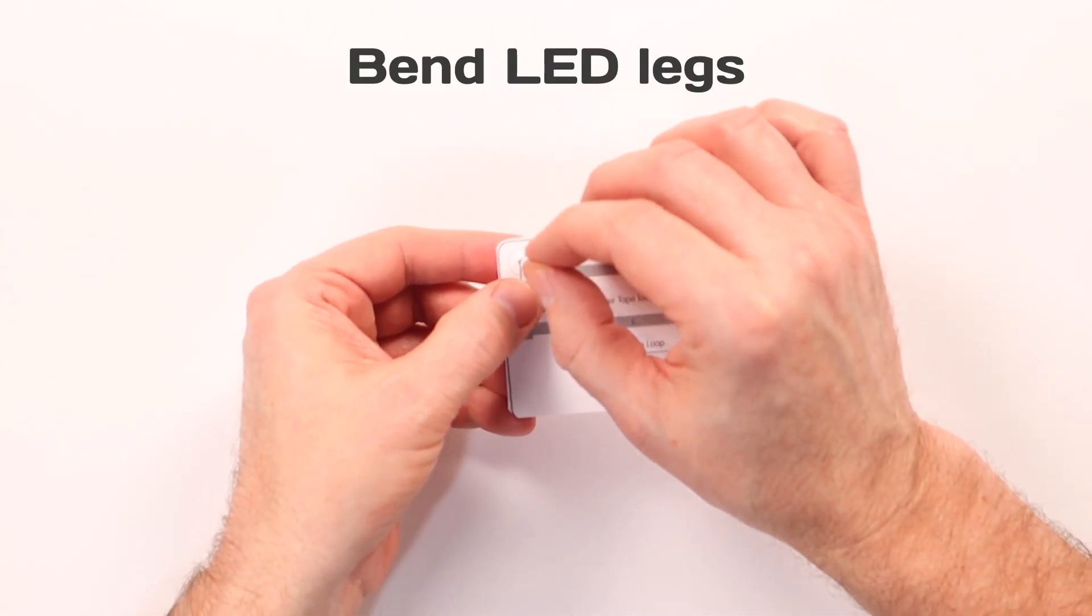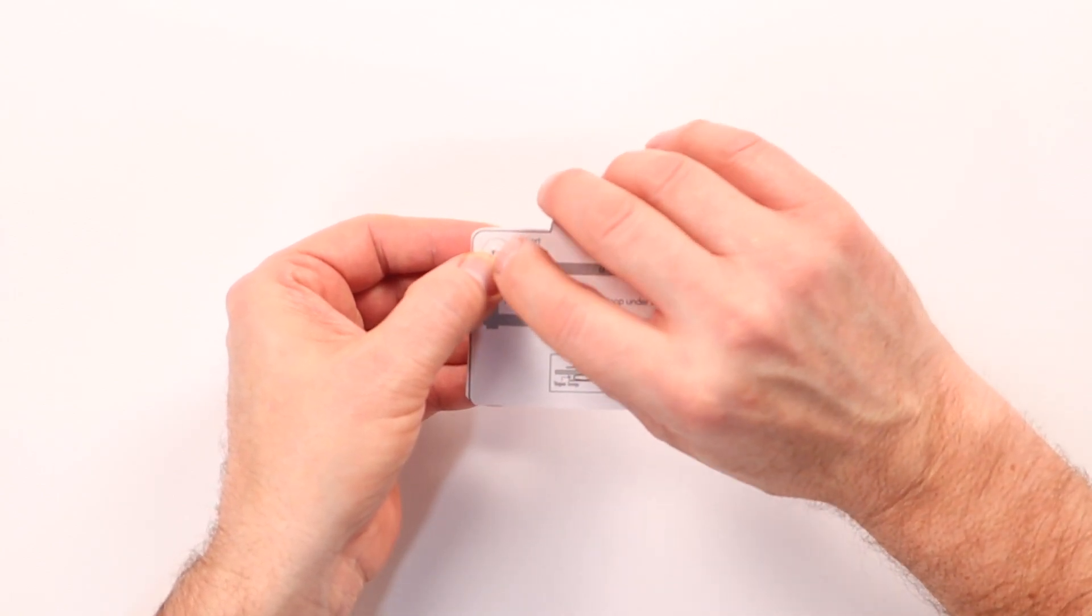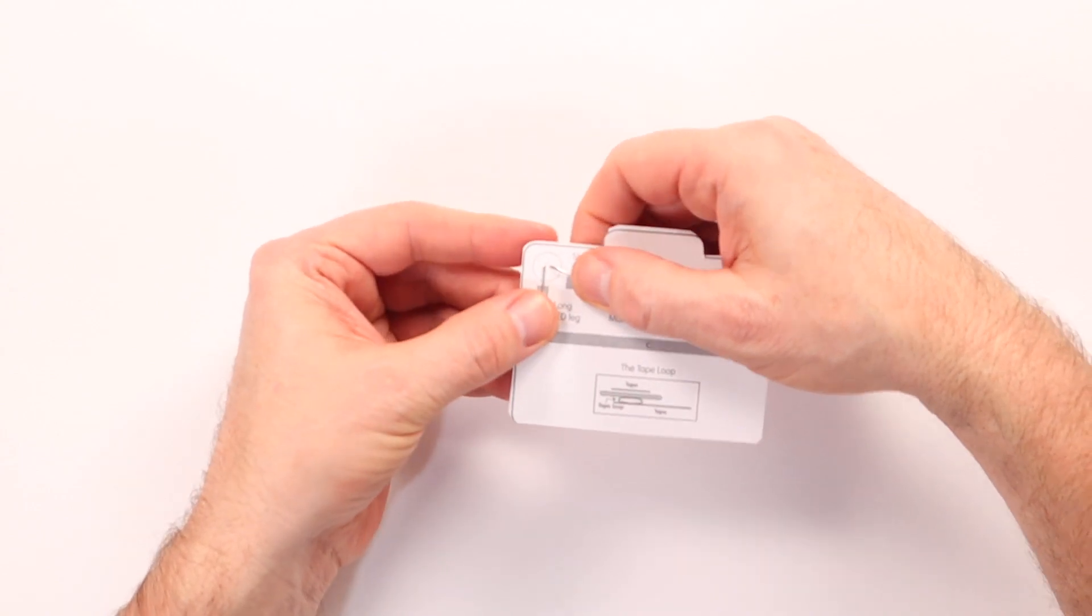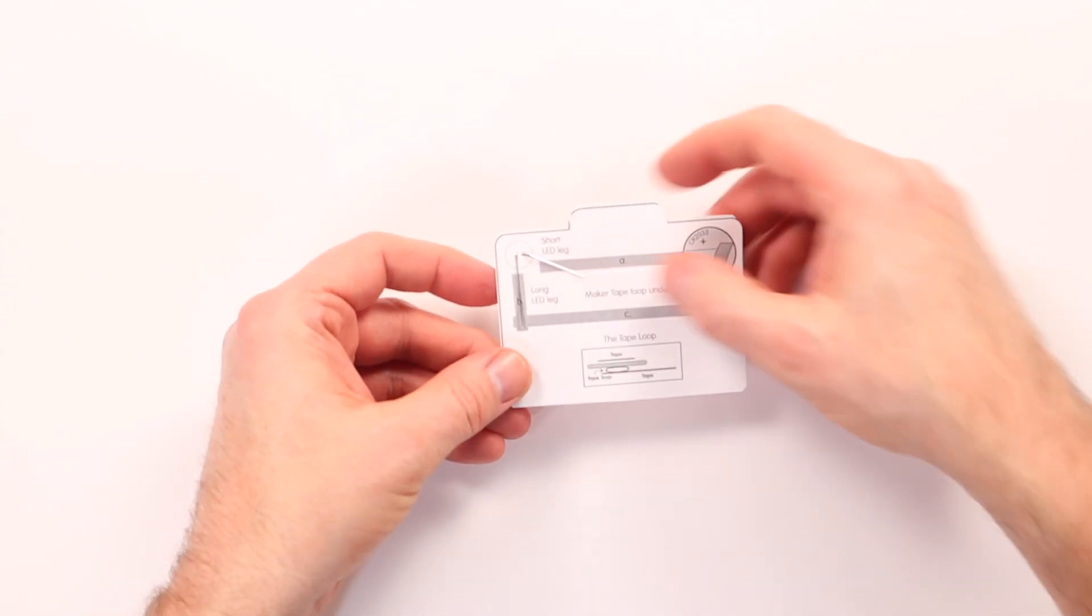Next we're going to bend these legs down flat against the paper. Again, with the longer leg on the outside, the shorter leg on the inside.